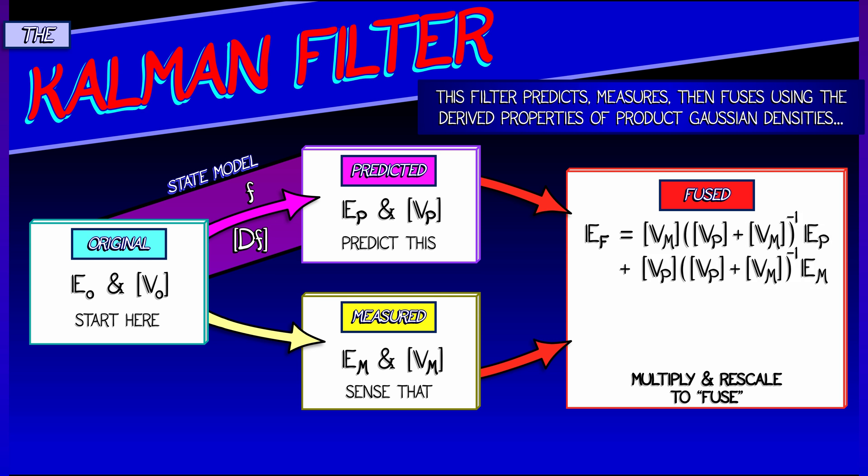This is quantity, V p plus V m inverse, pre multiplied by V p, and then post multiplied by E m. That is our fused expectation.